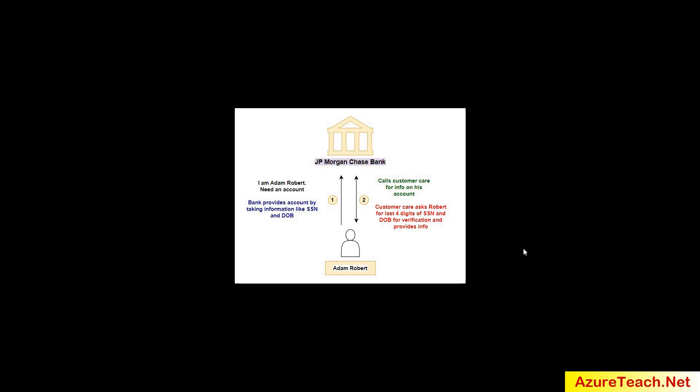Let us understand the same scenario again. Now when Adam needs an account with the bank, the bank asks him for SSN and date of birth and provides an account. Later when Adam needs information on his account and calls customer care, the representative asks him for the last four digits of his SSN and date of birth for verification. Based on this, the customer care representative can know whether they are disclosing information to the legitimate Adam or not.